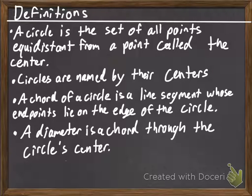So a chord, so this is the definition of a chord. A chord of a circle is a line segment whose endpoints lie on the edge of the circle. And the diameter is a chord through the circle's center.